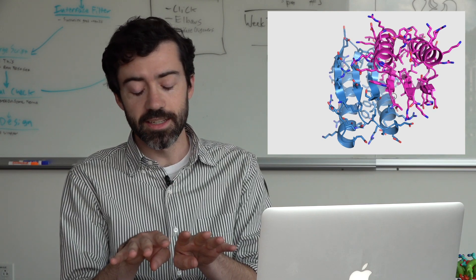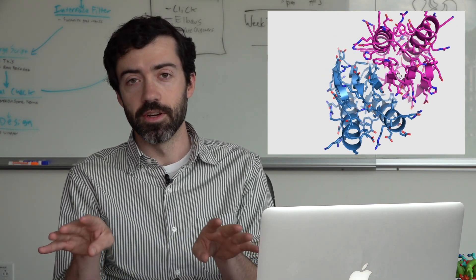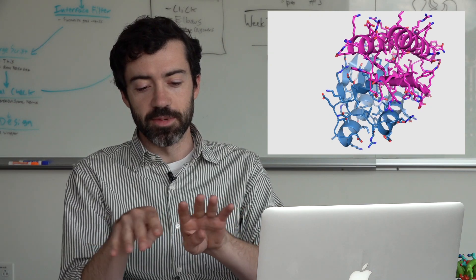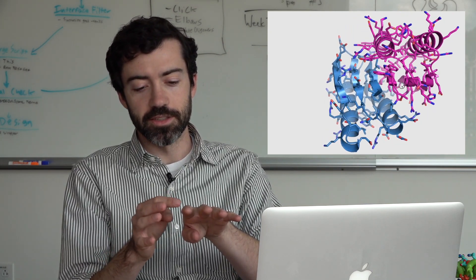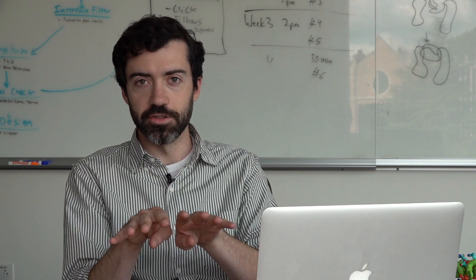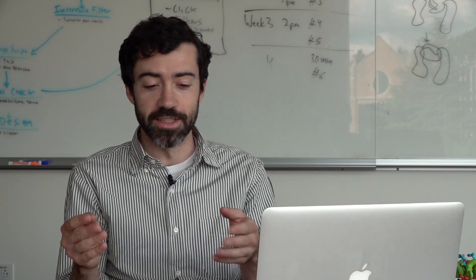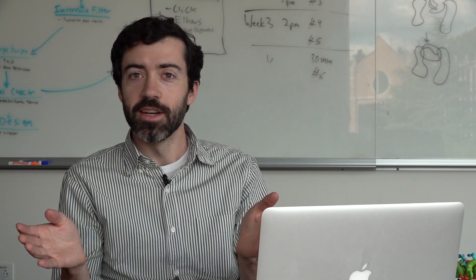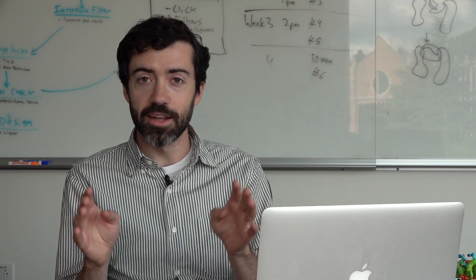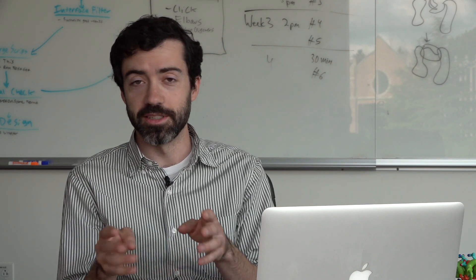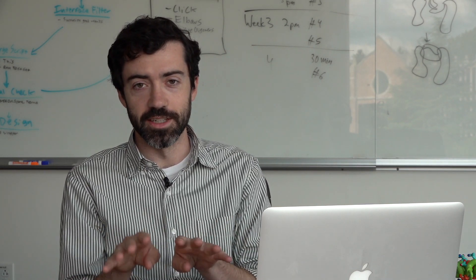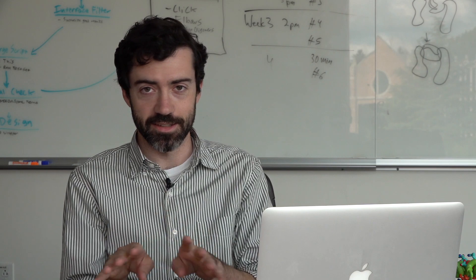So Flo and Danny did this. They took a bunch of Foldit player designs and they randomly docked them against one another and tried designing just the residues at the interface where these two proteins would come together. They ordered and tested a bunch of them. And lo and behold, some of the heterodimers that they ordered, based on Foldit player designs, seem to form heterodimers in solution. They seem to perform exactly as they were designed.